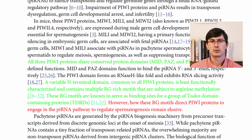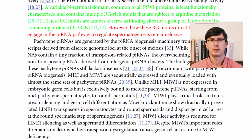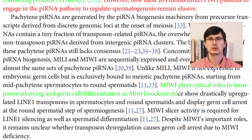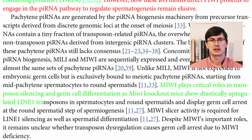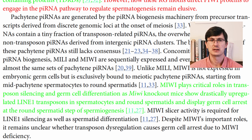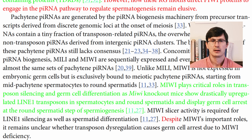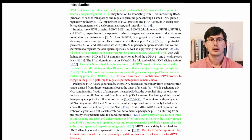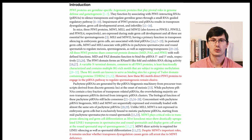Now let's move to the second part. The authors explain that MIWI can do two things in spermatogenesis: MIWI plays critical roles in transposon silencing and germ cell differentiation, as MIWI knockout mice show drastically upregulated LINE-1 transposons in spermatocytes and round spermatids, and display germ cell arrest at the round spermatid step of sperm development. Then the authors present the gap they are going to address: despite MIWI's important roles, it remains unclear whether transposon dysregulation causes germ cell arrest due to MIWI deficiency. We now have the first part of the intro with two sections — the first background followed by the first question, and then the second background followed by the second question.